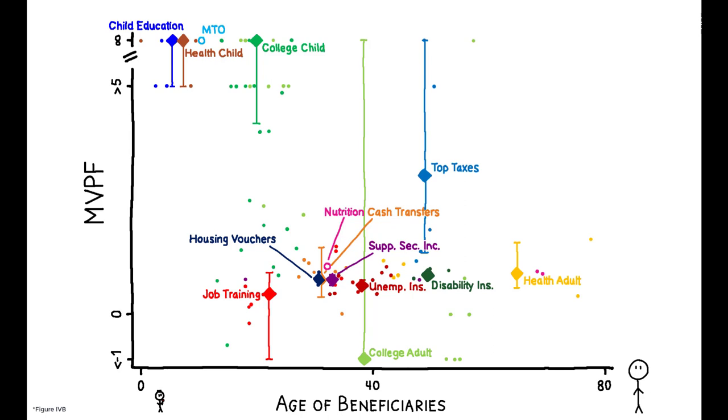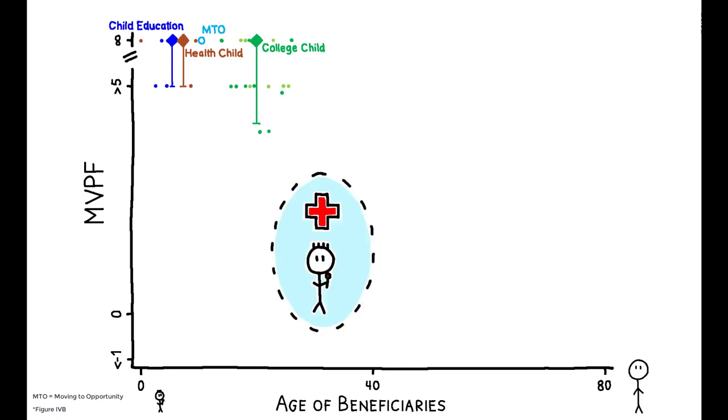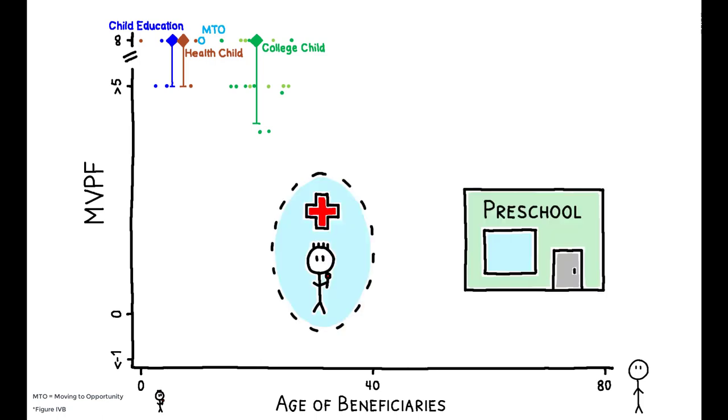The primary finding is that investments in the health and education of low-income children have historically had the highest MVPFs. Policies including health insurance expansions, childhood education spending, and expenditures on college have generated the greatest benefit per dollar of government spending.